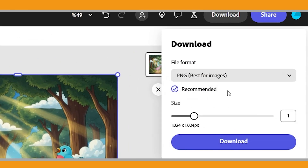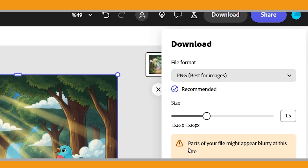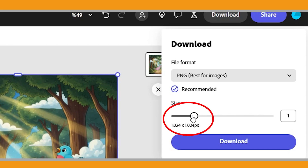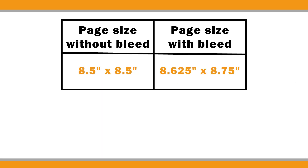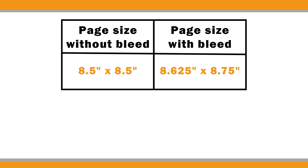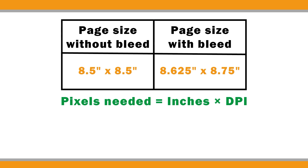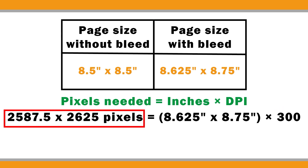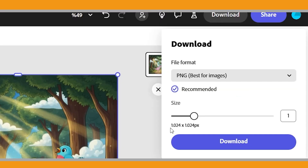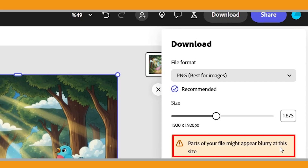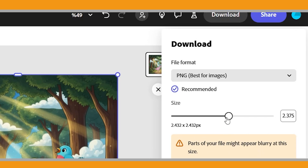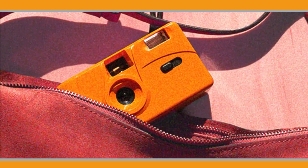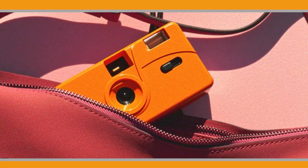You can download as PNG, JPG, or PDF and adjust the image size — however, the image will default to 1024 by 1024 pixels, which is too small for print. For children's books on Amazon the most common format is 8.5 by 8.5 inches square, and since our artwork goes to the edge we also need bleed, making the final file size 8.625 by 8.75 inches. Here's the formula: pixels needed equals inches times DPI. Most print platforms recommend at least 300 DPI, which means our image should be around 2587 by 2625 pixels.